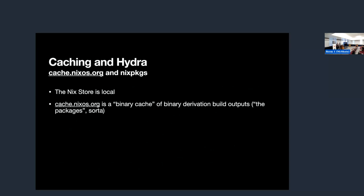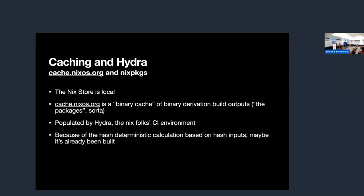The Nix store is local — it goes on your computer or your server or wherever. By the way, this runs on macOS and Linux and runs pretty well on Windows Subsystem for Linux. There's a binary cache of all those derivations and outputs up in the cloud. They automatically populate it — every time a new version of Nix packages is pushed, Hydra goes through and rebuilds all 80,000 of those. If somebody bumped the version of OpenSSL for PHP, it'll rebuild the whole set of PHP for that dependency.